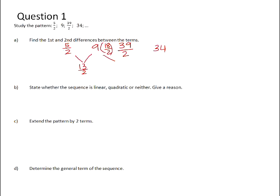And the difference between 9 and 39 over 2 is 21 over 2. 39 less 18 is 21. And the difference between 34 and 39 over 2 is 29 over 2.